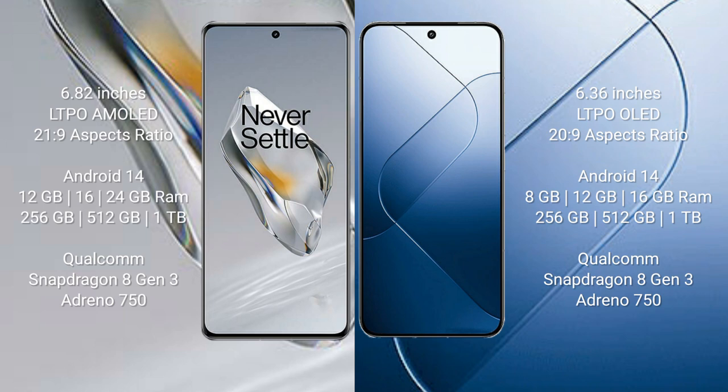OnePlus 12 comes with 12GB, 16GB, and 24GB RAM options, with 256GB, 512GB, and 1TB internal storage. It is powered by the Qualcomm Snapdragon 8 Gen 3 processor and Adreno 750 GPU.